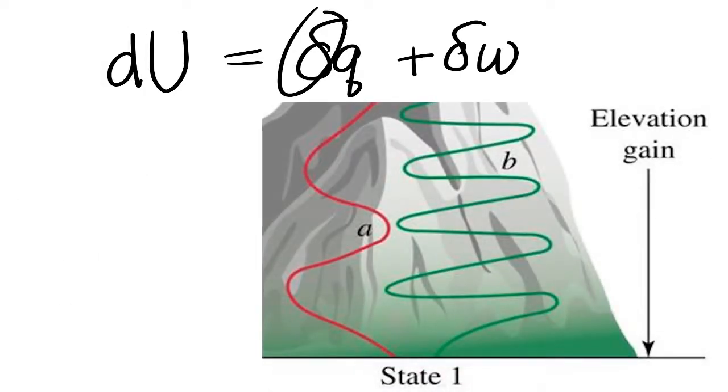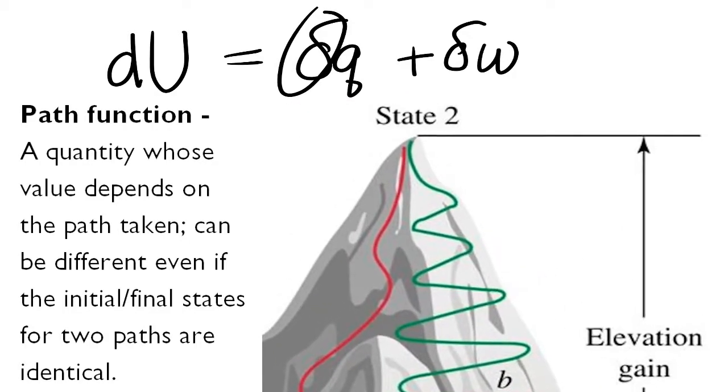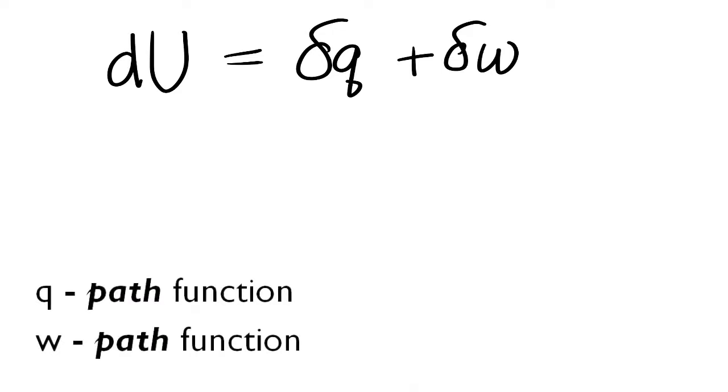When we write delta like this, we're saying it's called a path function. A path function's value will change depending on what path you take. The heat flow and the work together are path functions, and the internal energy is obtained when you include all the heat flow and the work that occur within the system. Interestingly enough, it turns out to give the value for a state function.